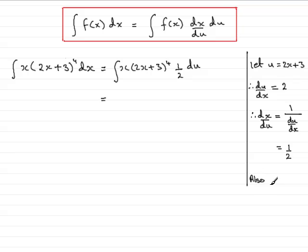Also, I can put that x equals, well clearly, if I subtract 3 from both sides, 2x is going to equal u minus 3. And then divide by 2, x is going to equal a half of u minus 3.